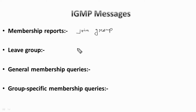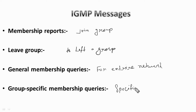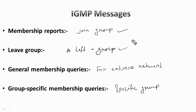Then we have the leave group message, which goes from a device to a router and allows devices to leave a multicast group. Then we have the general membership query — a multicast-capable router sends these messages to the entire connected network to update multicast group membership for all groups. Then there are group-specific membership queries, where the router sends messages to a specific multicast group instead of the entire network. Devices that are part of a multicast group can join or leave at any time by sending an IGMP join or leave group message.